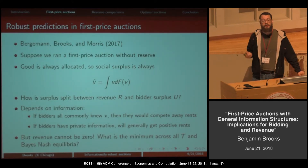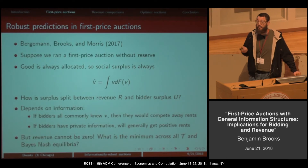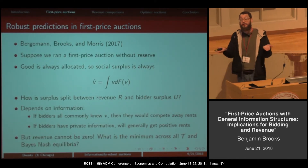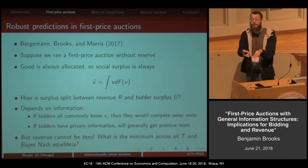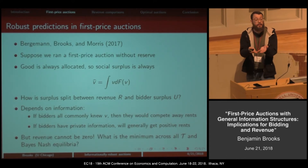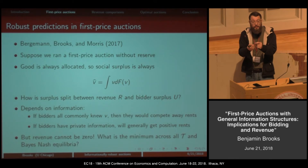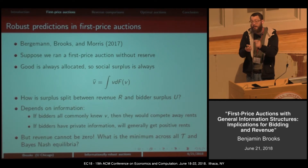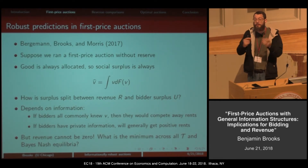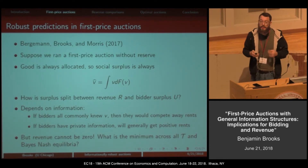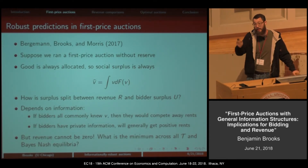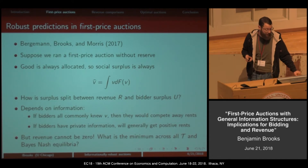Revenue can't go down to zero. To see that: if revenue were going to be zero in a first price auction, all bidders would have to be bidding zero with probability one. But then any bidder could deviate to bidding epsilon — there's got to be some bidder winning with probability at most 1/N, and by bidding epsilon you win all the time and pay only a tiny bit more. So that suggests there is a non-trivial lower bound on revenue and on how low bids can go, and that's essentially what we characterized in this paper.